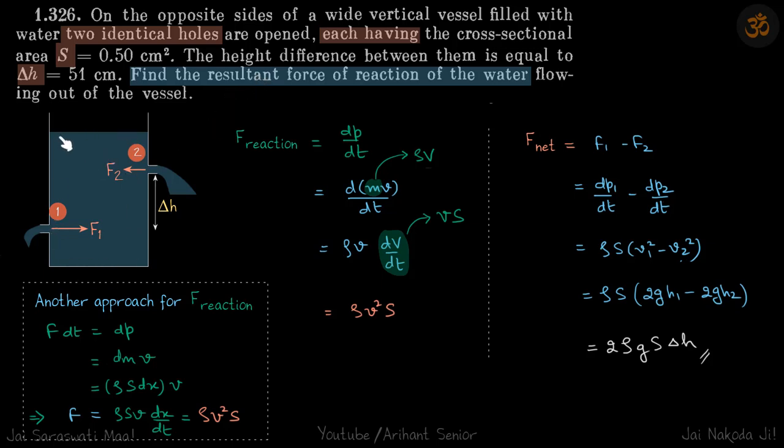We have a water column and two holes are put in, and the gap between the holes is delta H. We need to find the resultant force of reaction of water flow on the vessel.